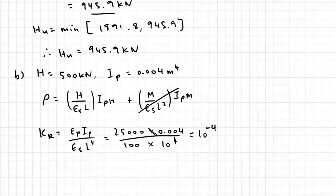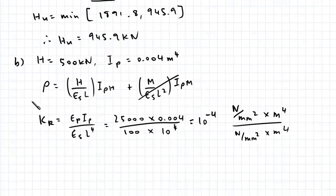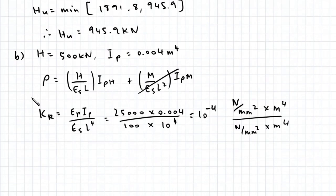Now I haven't needed to convert any of these units because if you do a dimensional analysis—megapascals, meters to power of 4, megapascals, and meters to power of 4—it all cancels out. Next, we need to find the ratio of length to diameter. That's 10 over 0.5, which gives us 20.